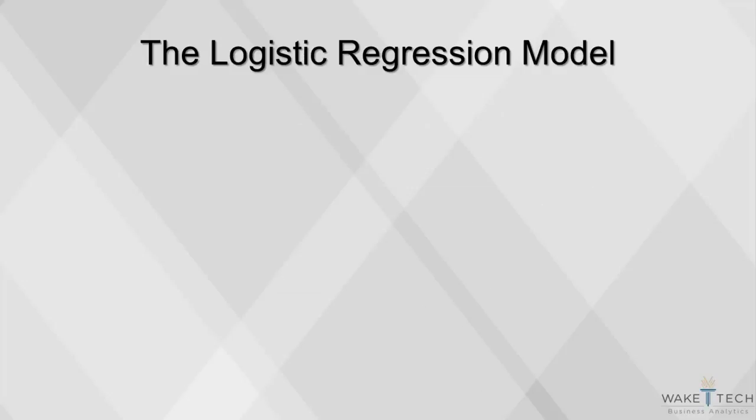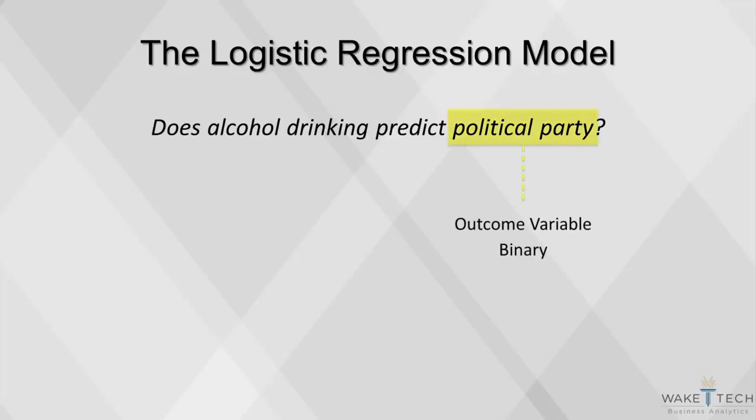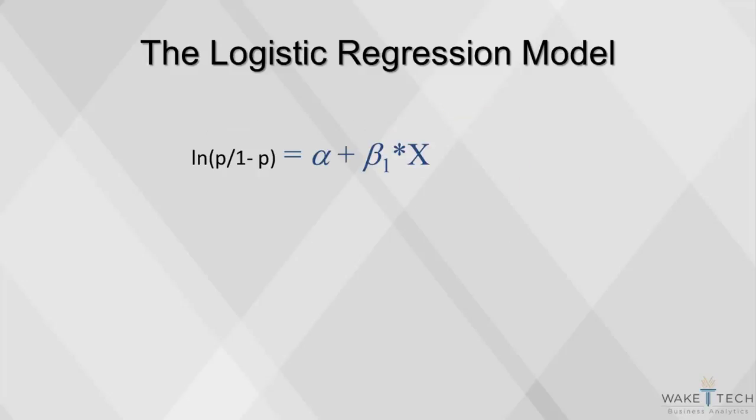Let's look at a very simple example of a logit function. Does alcohol drinking predict political party? Political party is the outcome variable, and it is binary. Therefore, we need a logistic regression. A typical logit equation contains the log of the odds ratio as the outcome, which is a linear function of the predictors x.